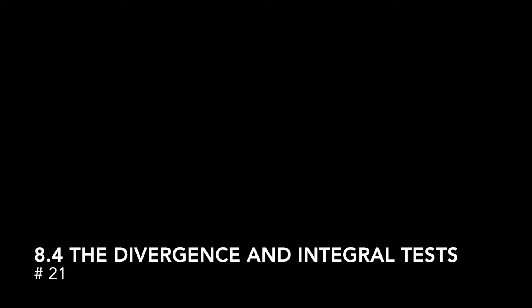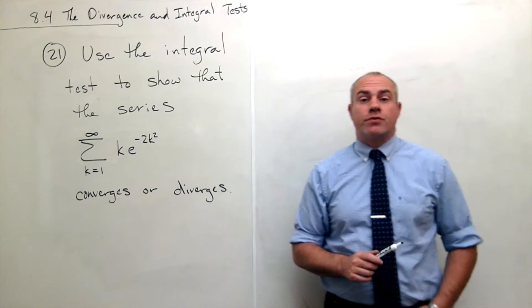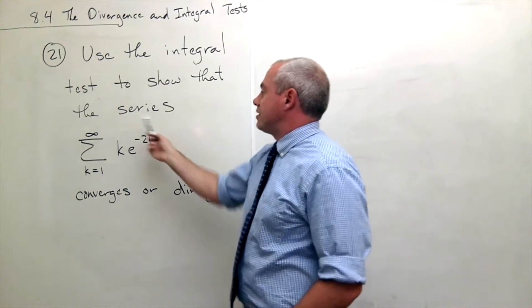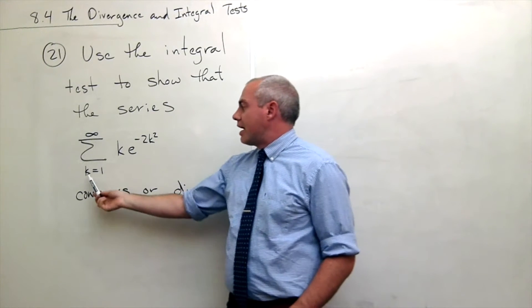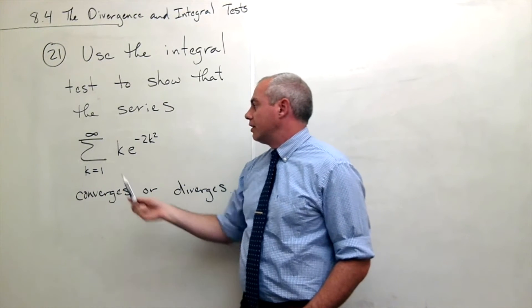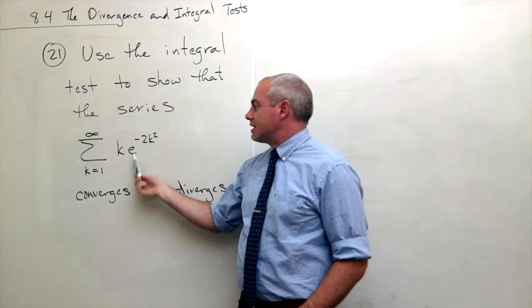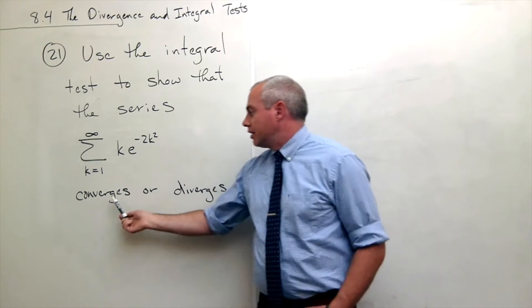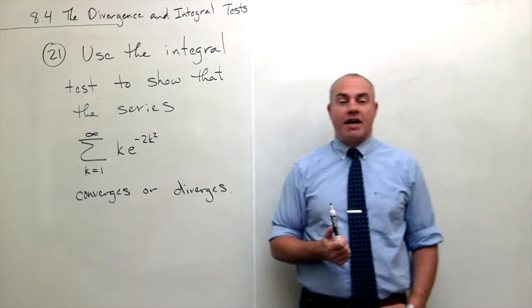I'm the calculus professor and today I'll be talking to you about the divergence and integral tests. In problem number 21, I'd like to use the integral test to show that the series sum k going from 1 to infinity of k times e to the negative 2k squared either converges or diverges.